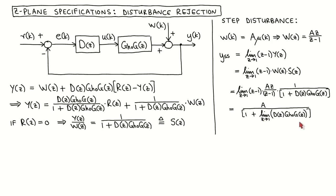An important fact to realize is that this analysis of the effect of the disturbance on the output depends on the location where the disturbance feeds into the system. For example, if the disturbance signal is added to the plant input or after the measured output, then we would have to redo the analysis.